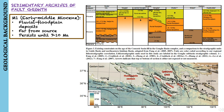The early Miocene stratigraphic package, named M1, consists of strata that were generally deposited in fluvial floodplain environments in regions distal from source ranges. This depositional episode persisted until around 7 to 10 million years ago.